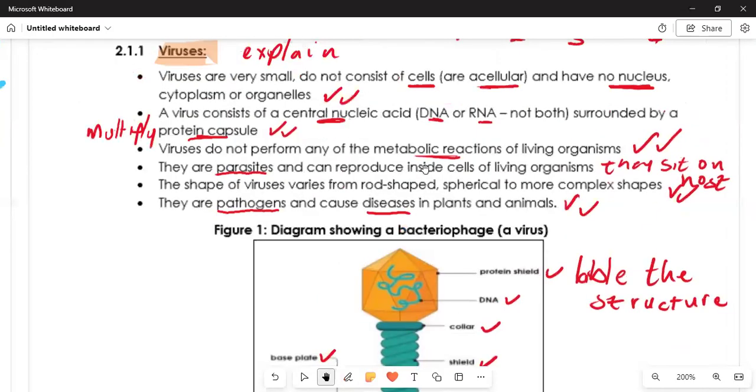Let us go now to viruses. We need to explain first what is a virus. Viruses do not consist of a cell, they are acellular. They've got no nucleus, cytoplasm, or organelles. Viruses multiply, and when they multiply they don't have the nucleus, so they don't carry genes of the central nucleic acid which is known as the DNA, or the RNA, not both. But some viruses contain one or the other with a protein capsule which makes them multiply or replicate.